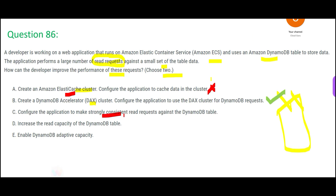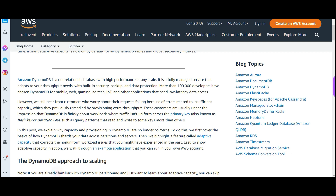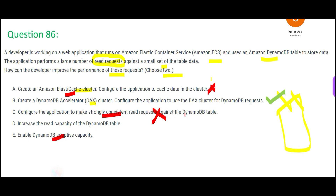Option C is wrong because it talks about strongly consistent reads. Consistency applies to writes — if you write a value X, can another person reading see X? That is consistency. Writes are consistent; reads are not. So option C is wrong. Option E refers to DynamoDB adaptive capacity, which is used for uneven data access patterns where some data sectors are accessed sparingly and others very heavily. In this scenario, we have a known, consistent heavy read load, so adaptive capacity is not the right fit — option E is also wrong.